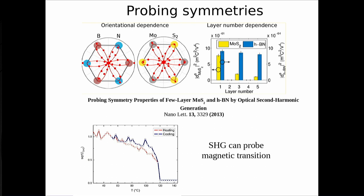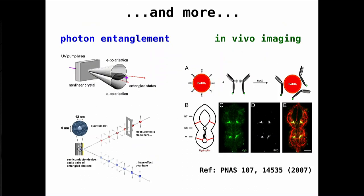There are also more exotic applications. You can use nonlinear optics in the inverse direction: send a high-frequency laser and generate many photons at a lower frequency, such as a green laser generating red photons. This process is used to create entangled photons for quantum communication and quantum information, with various experiments exploiting nonlinear crystals in this way.